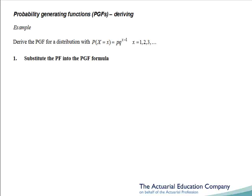Step 1 of our method is to substitute the probability function into our probability generating function formula. Recall that the PGF was defined to be the sum of t to the x times the probability function. So substituting in our probability function gives the sum of t to the x times p times q to the x minus 1.